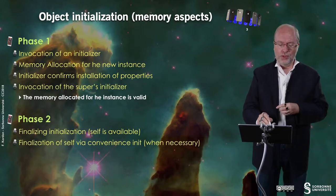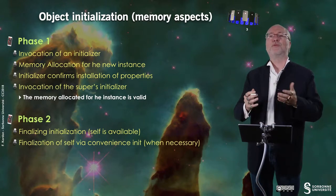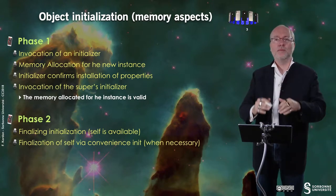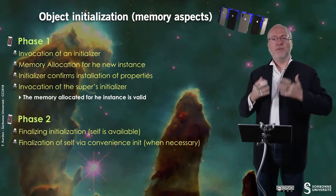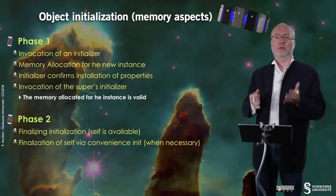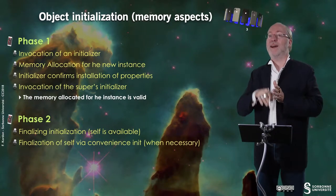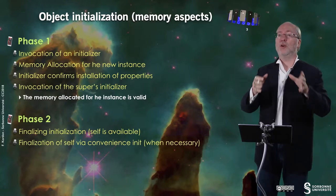Let's have a look at the object initialization sequence from the memory aspect. You have two main phases. You invoke an initializer that first allocates memory for the new instance, and then the initializer confirms installation of properties in memory. Then there is the invocation of the super's initializer. Remember that in Swift, it's done after you have set up the local properties.